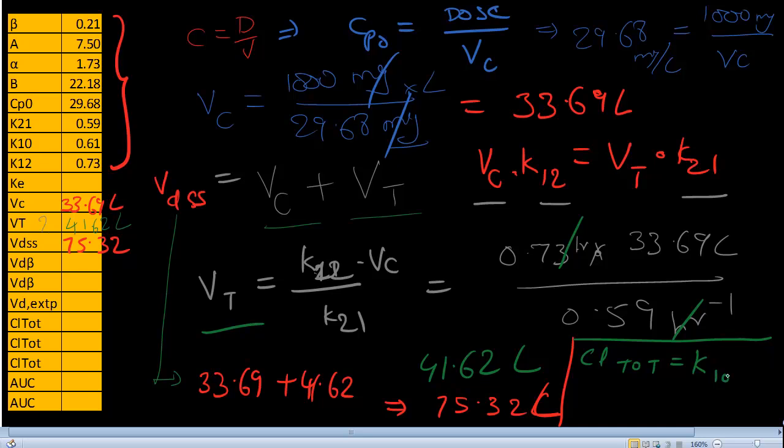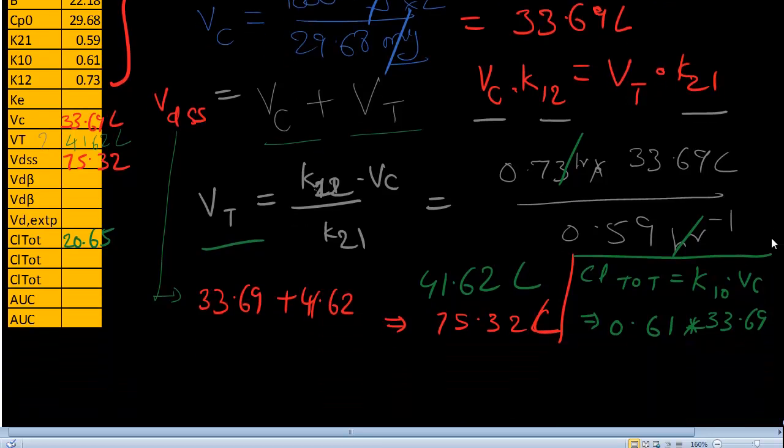One way is using K10 times Vc. Let's calculate that because we have K10 information already. 0.61 is K10 hour inverse times what is Vc? Vc is 33.69. If you multiply that, we'll have a value of 20.65. I'm going to write this here 20.65. Now let's move this little bit down.